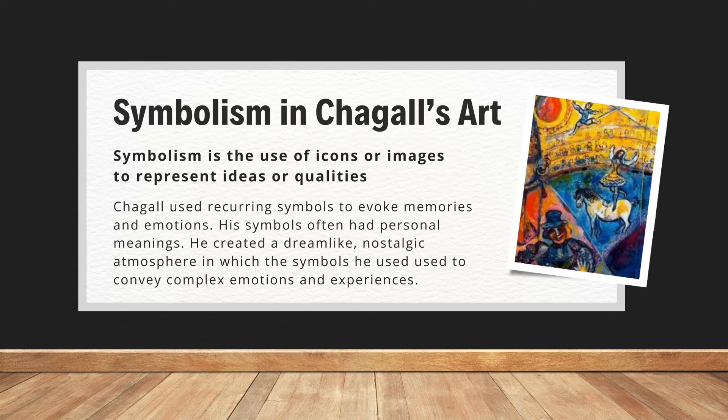One of the major things you are going to see in Chagall's artwork is his use of symbolism. Symbolism is the use of icons or images to represent ideas or qualities — drawing or painting objects to represent deeper stories with deeper meanings. He used recurring symbols in many of his pieces to evoke memories and emotions, and his symbols often held personal meanings. He had a dreamlike quality in a lot of his work, and I want you to think about how we can use symbols and dreamlike qualities to create pieces that tell our own unique story.